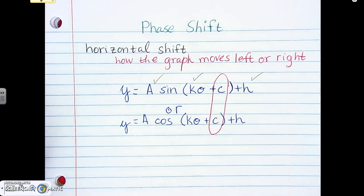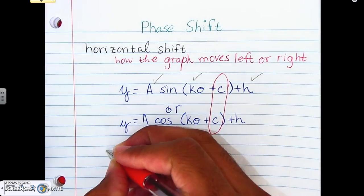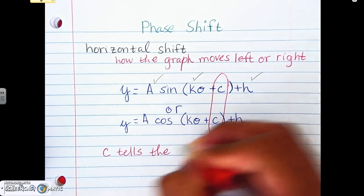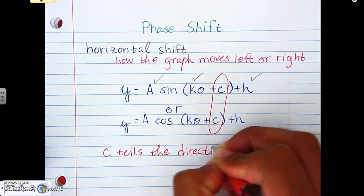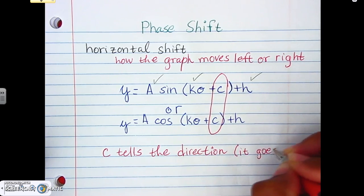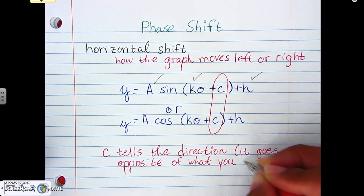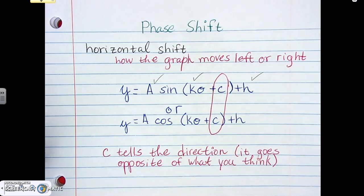Now, to find our phase shift, we're going to use K and C together. But to know what direction you're moving in, all you have to do is look at C and do what we did before. We said that if it was positive on the inside, it went one direction. If it was negative on the inside, we went to the opposite direction. And it was opposite of what you thought. So, just like the other transformations we've talked about, it goes opposite of what you think. So, if it's a positive C, it goes left. If it's a negative C, it goes right.